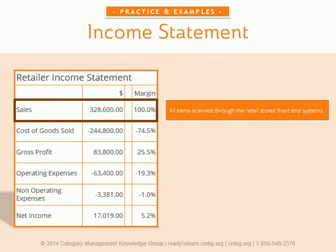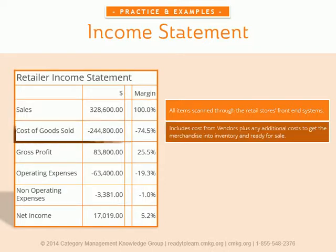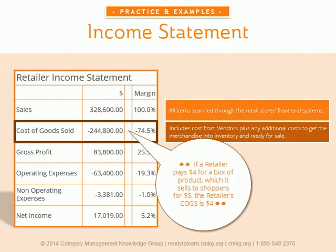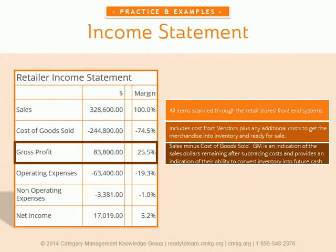Here's a basic income statement for a retailer. Basically, the income statement shows how much money the company generated — revenue or sales — how much it spent — or expenses — and the difference between the two, revenue or profit, over a certain time period. Revenue, also commonly known as sales, is generally the most straightforward part of the income statement. Often there's just a single number that represents all the money a company brought in during a specific time period, although big companies sometimes break down revenue by business segment or geography. So this retailer sold goods to its customers for $328,600.